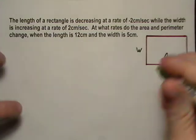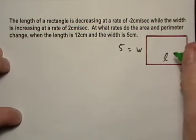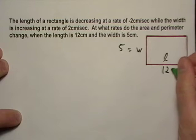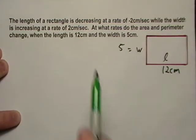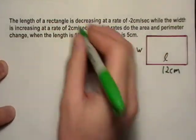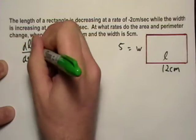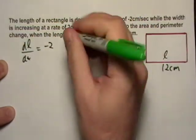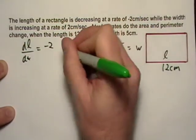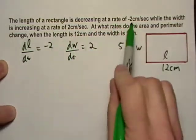Let's just go ahead and fill these in right here. The width is 5, and the length is 12 centimeters. And it's given to us that dl over dt is negative two and dw dt is just regular two. We just picked that out of there.